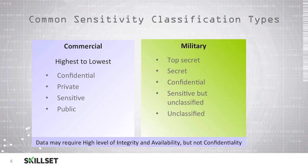Here we have some sample labels that we can use to classify our data. In the private sector, we can use confidential for our most sensitive data, then private, then sensitive, and our lowest classification would be public data that we release to the public or maybe post on our website. In the military, our highest classification level is top secret, then secret, then confidential, then sensitive but unclassified, and finally unclassified for our data that needs the least amount of security.